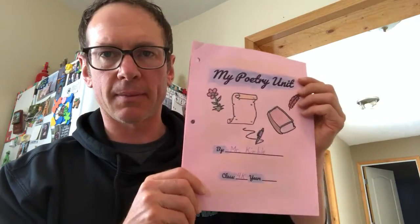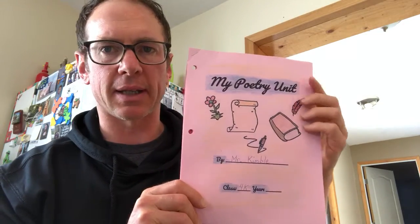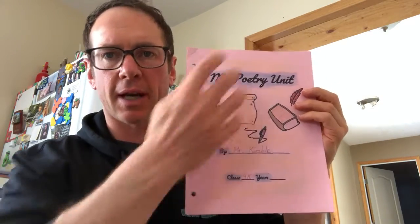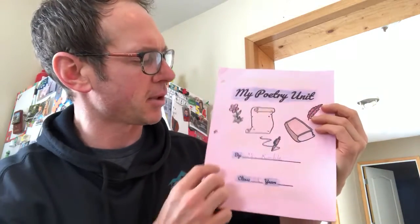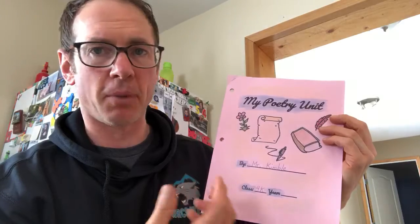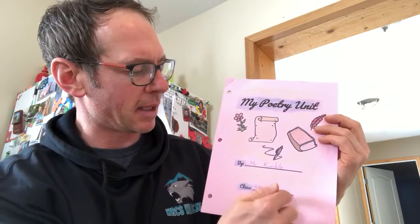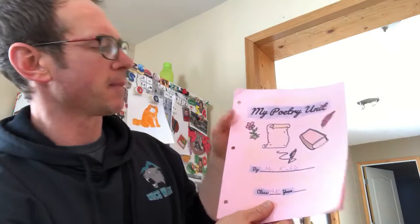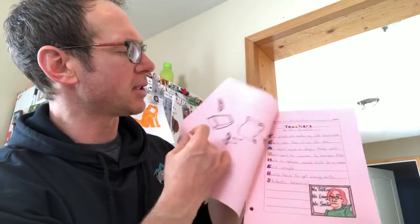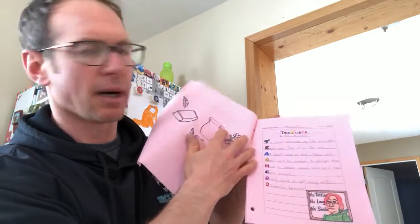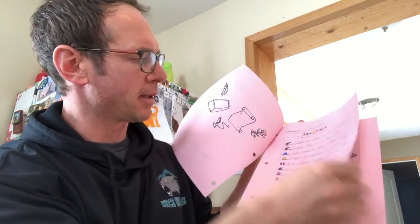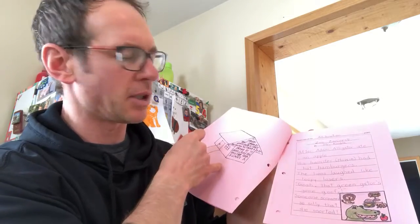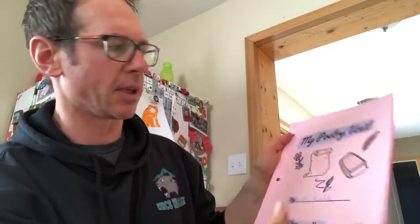Normally what I have you do is make a book — something like this. On the front there's a title page that says 'This is my poetry unit,' with some pictures that remind me of poems, my name, my class, and the year. Inside there's a series of poems: an acrostic one, a concrete one, and an alliteration poem.